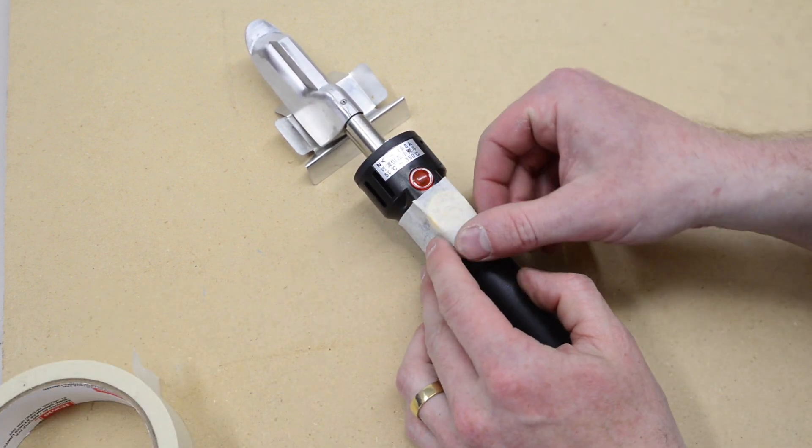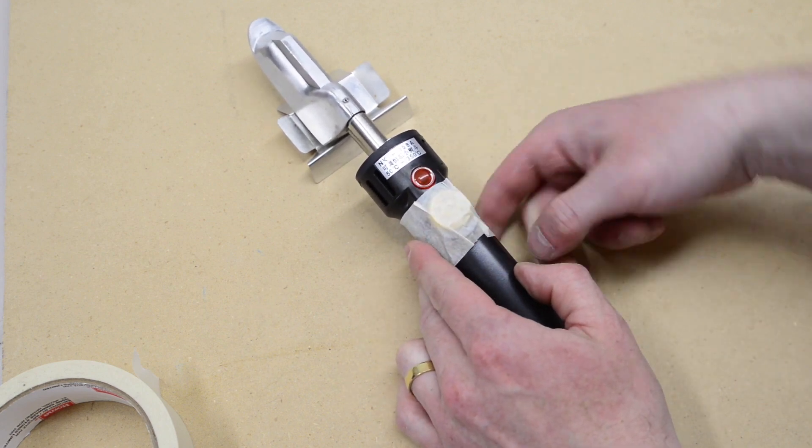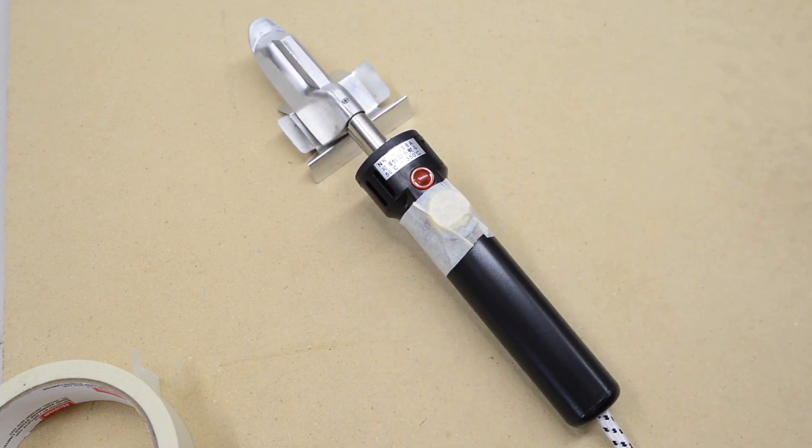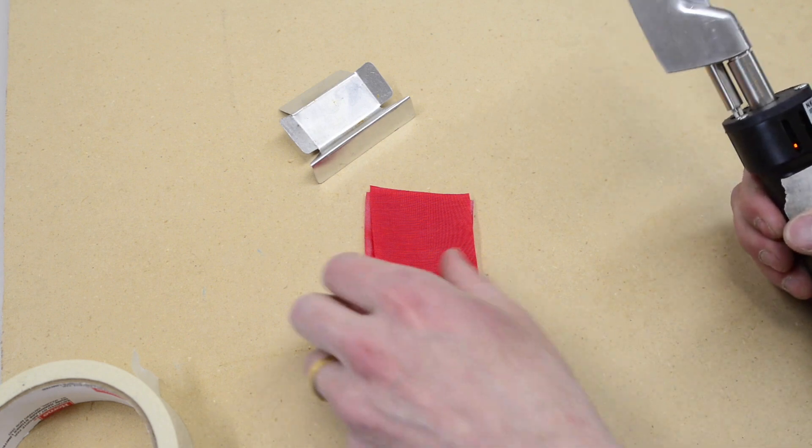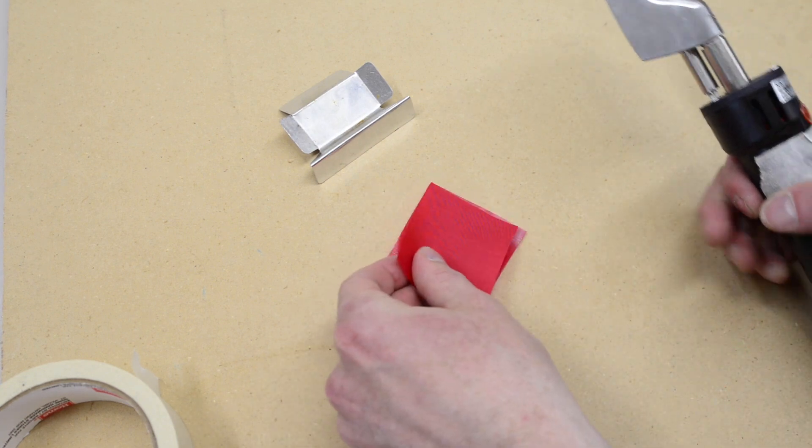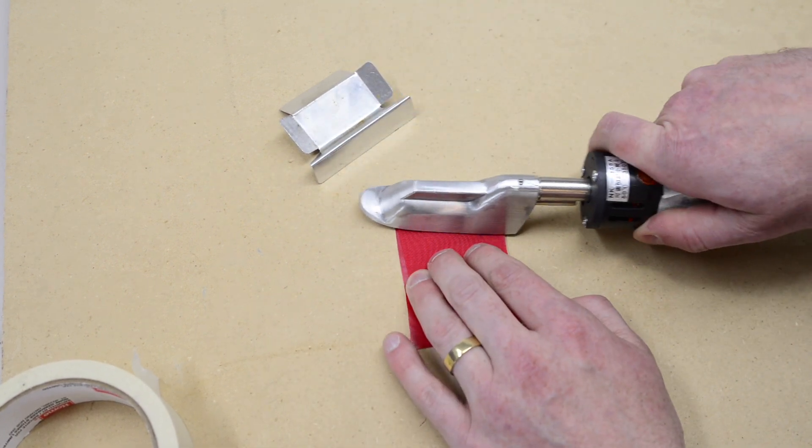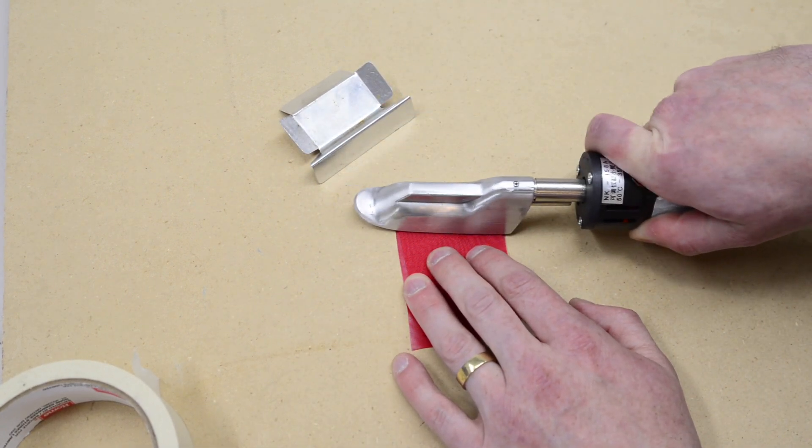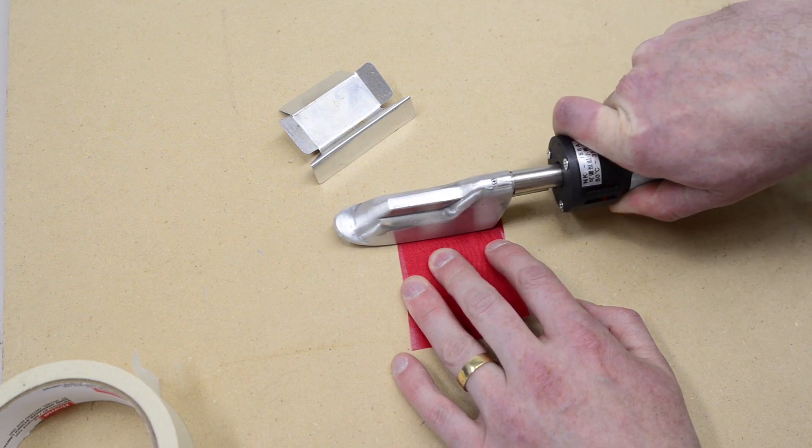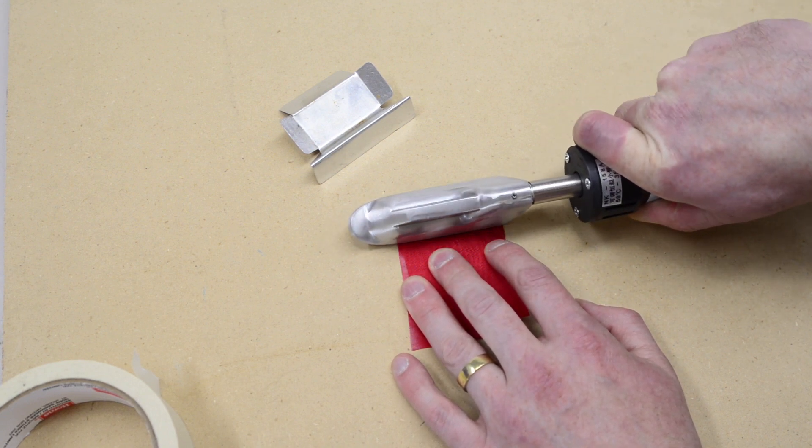I find that the adjustment knob is easily turned by accident, so after setting it I always cover it with a piece of tape. These irons take a long time to heat up, so wait at least 15 minutes before testing yours on a scrap of heat sealable fabric. You can watch my other video about proper heat sealing technique to learn how to tell when the temperature is set correctly.